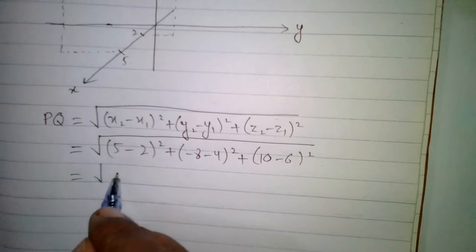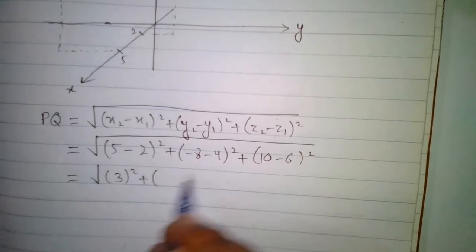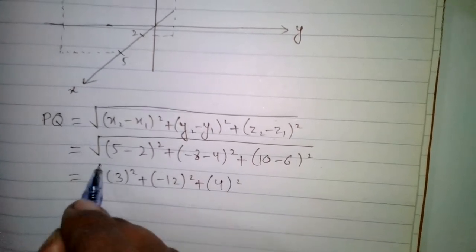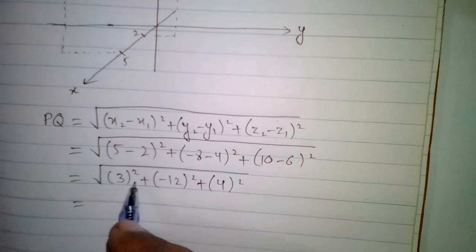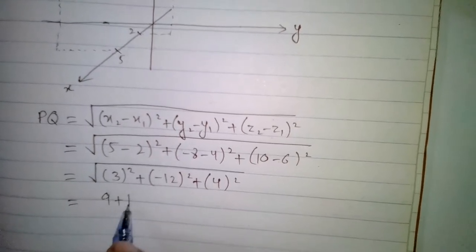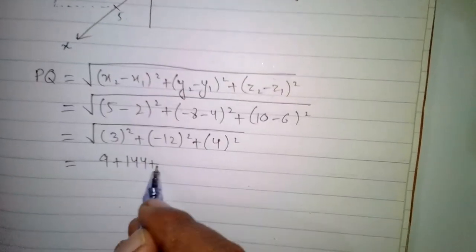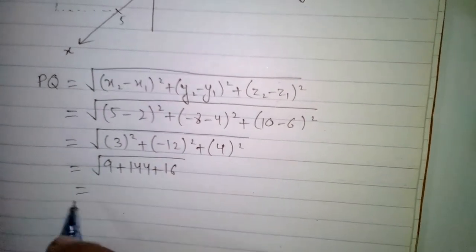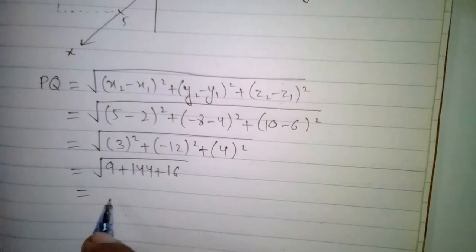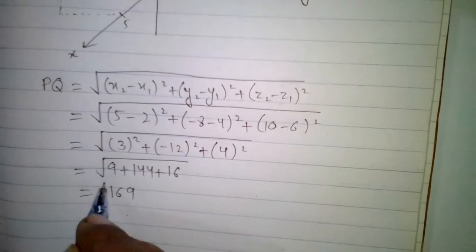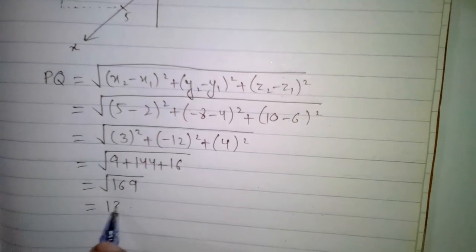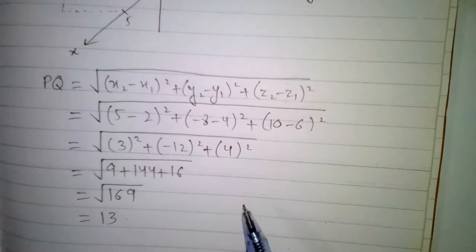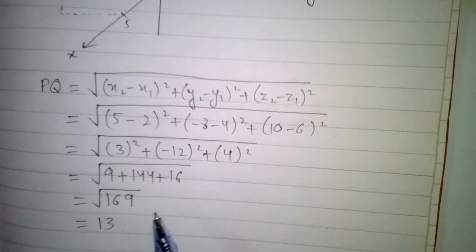Now 5 minus 2 is 3, minus 8 minus 4 is minus 12, and 10 minus 6 is 4. The square of 3 is 9, the square of minus 12 is 144, and the square of 4 is 16. Adding these values we get 169 under the square root, and the square root of 169 is 13. So the distance between P and Q is 13.